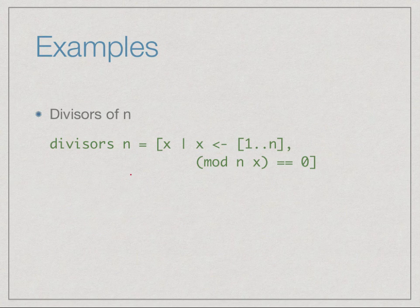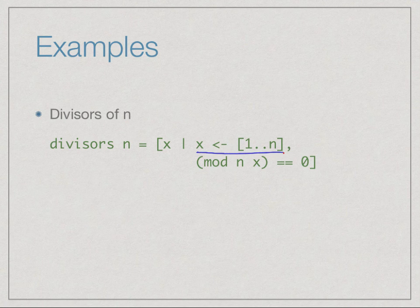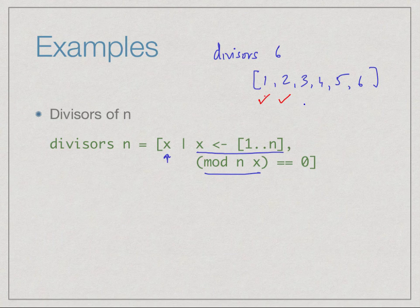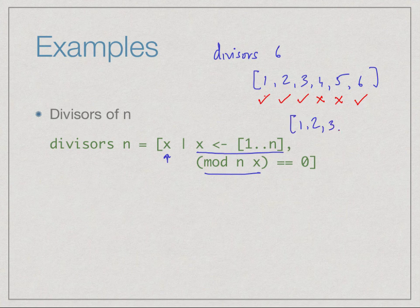Here is an example: finding the divisors of n. The divisors of n are those numbers that divide n without leaving any remainder. The divisors of n must be in the range 1 to n, so we take all elements in that range and keep those where n mod x equals 0. For example, divisors of 6: we generate 1 through 6 and check — 1, 2, 3, and 6 divide evenly, while 4 and 5 do not.